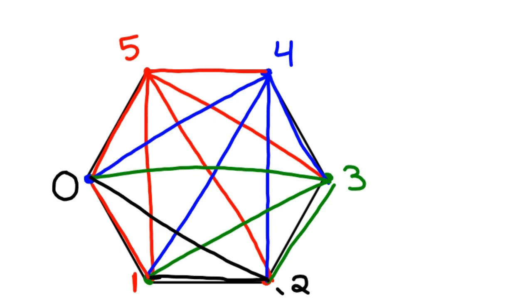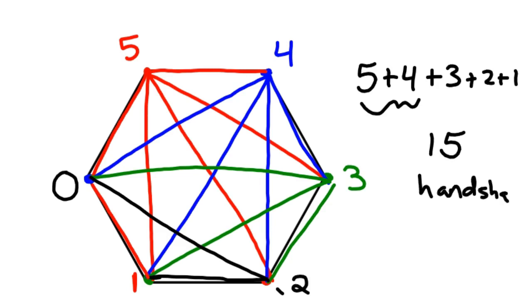He has to initiate zero handshakes. And so the total here would be five plus four plus three plus two plus one, plus zero. So there's nine, twelve, thirteen, fourteen, fifteen handshakes. Okay, that's one way to solve it.